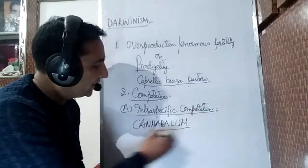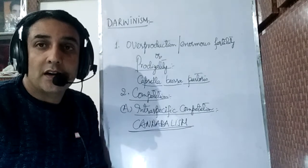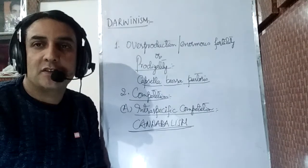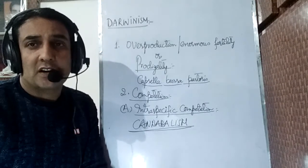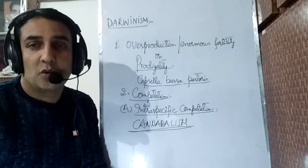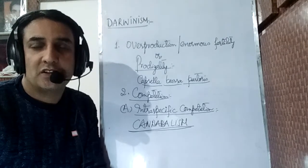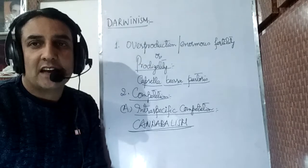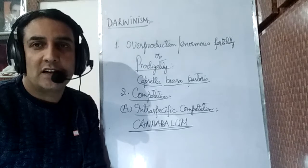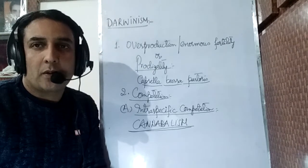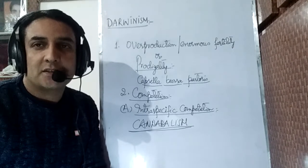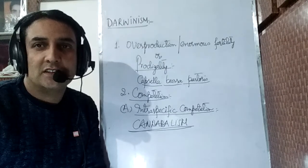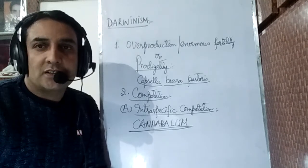Cannibalism is a phenomenon in which an organism feeds upon or eats another organism of the same species. One who practices cannibalism is known as a cannibal. Cannibalism is a type of intraspecific competition, and it is the most severe type as the needs of organisms of the same species are always the same. For example, some larger snakes eat smaller snakes of their own species. In an exam you may be asked: cannibalism is a type of which competition — the correct answer is intraspecific competition.